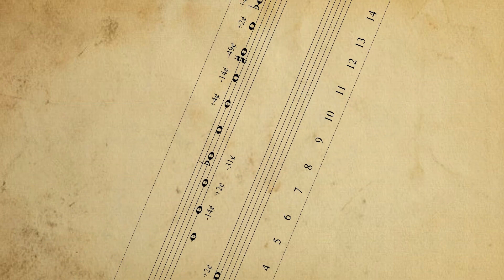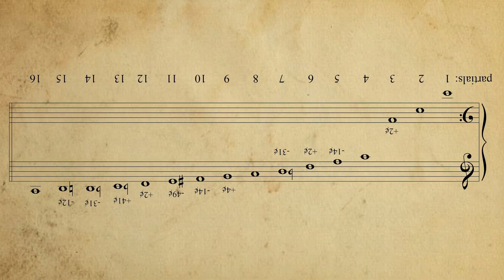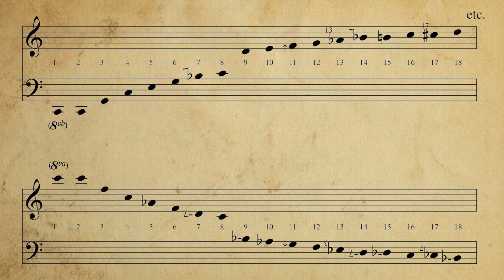The inversion of the overtone series is the undertone series. If you tune your intervals to these harmonic series, you play in just intonation. However, a number of mathematical issues arise when you try to play in different key signatures using only the harmonic series.